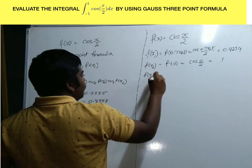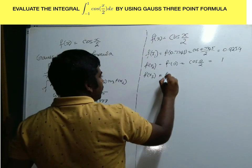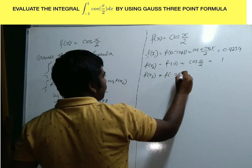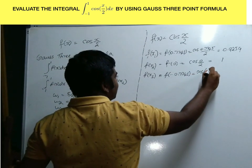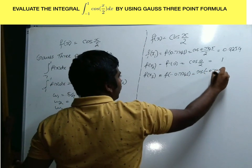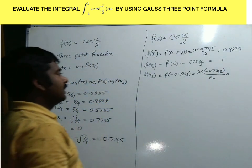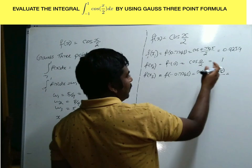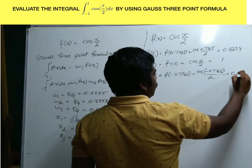Then f(x3). Here x3 equals minus 0.7745. Therefore, f(minus 0.7745) equals cos(minus 0.7745/2). Since cos(minus theta) equals cos(theta), this is cos(0.7745/2), which equals 0.9259.